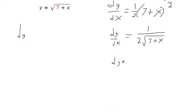And to finish solving for dy, we're just going to multiply that dx to both sides. So this is one over two square roots of seven plus x dx. That's what we would want to type in WebAssign.